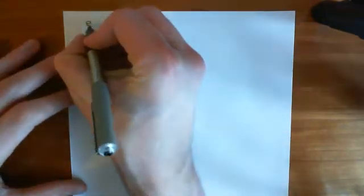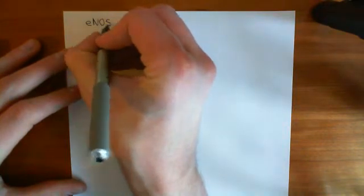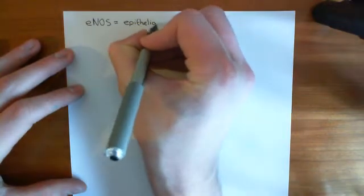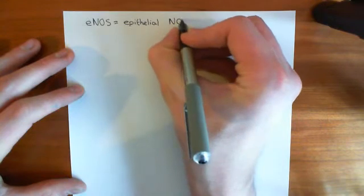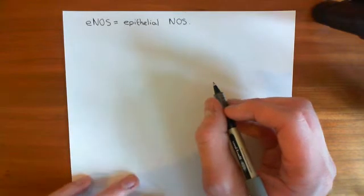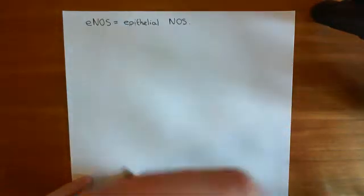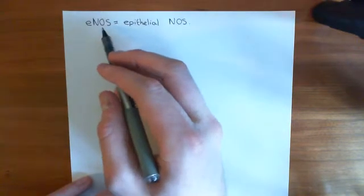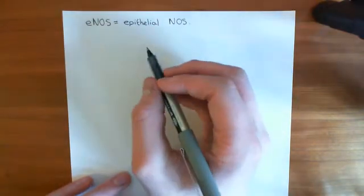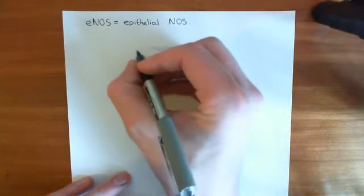Let's have a little bit of revision about the structure of eNOS enzymes. eNOS stands for endothelial nitric oxide synthase. The eNOS protein is not a functional enzyme on its own. Instead, what it needs to do is dimerise with another eNOS protein. It occurs in homodimers.